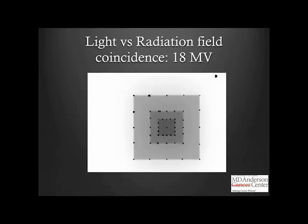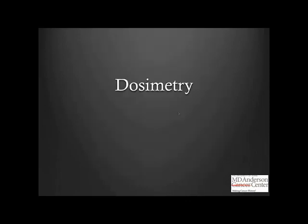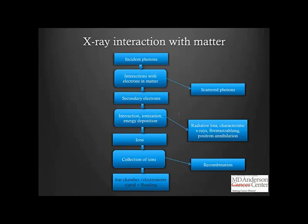Moving on to dosimetry aspects, let's have a brief refresher on interactions of matter. Radiation is delivered by accelerating electrons that hit a target, and the Bremsstrahlung radiation generated as the electrons hit the target produces photons incident on the medium. These photons interact with electrons in the medium, producing secondary electrons and scattered photons. Contrary to common perception, it is not the photons but the secondary electrons that actually deliver the dose through ionization and energy deposition mechanisms.